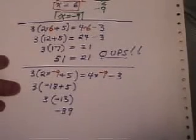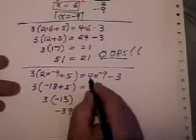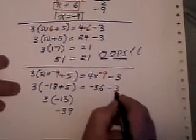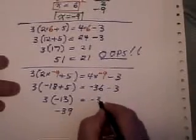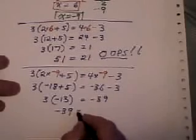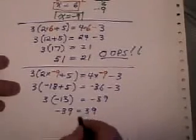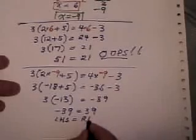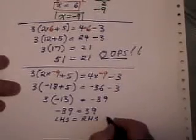The right-hand side, 4 times negative 9 is negative 36. And negative 36 subtract 3 is also negative 39. Therefore, the left-hand side equals the right-hand side. And I know the question is correct.